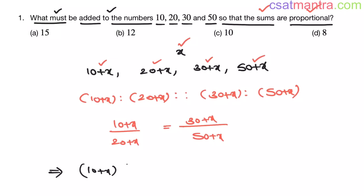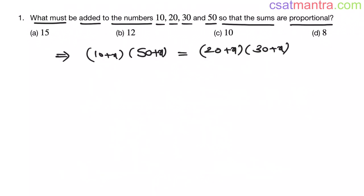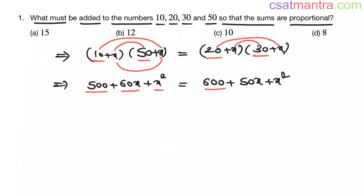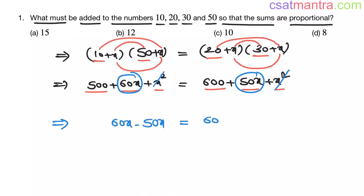After cross multiplication: 10 plus x times 50 plus x gives 500 plus 60x plus x squared. And 20 plus x times 30 plus x gives 600 plus 50x plus x squared. Here 10 into 50 is 500, and 10x plus 50x is 60x, and x into x is x squared. Similarly, 20x plus 30x is 50x, and x into x is x squared. Now x squared and x squared get cancelled. So we have 60x minus 50x equals 600 minus 500.